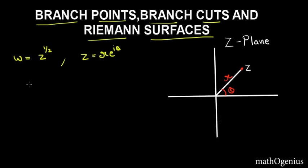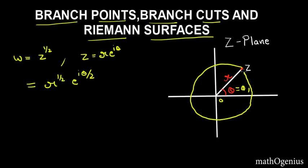Now let's substitute z into the function. We get w = R^(1/2) · e^(iθ/2). Let's look at this on the graph. When θ = θ₁ we are getting a specific value. Now what we will do is make a rotation around the origin — we go around and come back to the same point, and we expect the function to return to the same value.